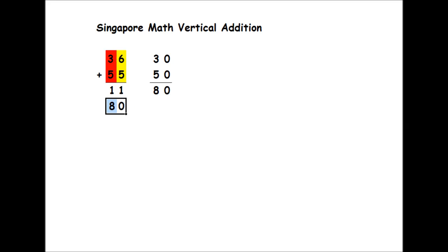So now I'm just going to draw a line. So now this is actually the number that you're adding. You're actually adding 11 plus 80, which would give us 91.